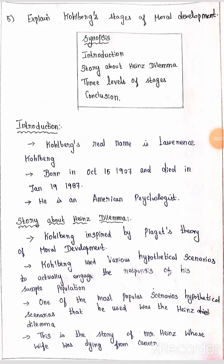Next, we will talk about Kohlberg's stage of moral development. First, we will talk about the introduction and the story about Heinz's dilemma, and the three levels of stages, and then the conclusion.